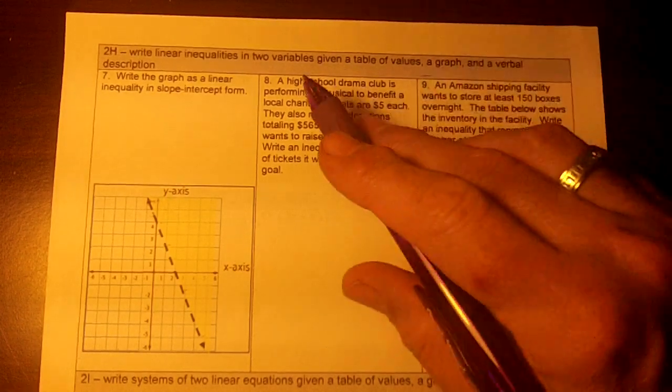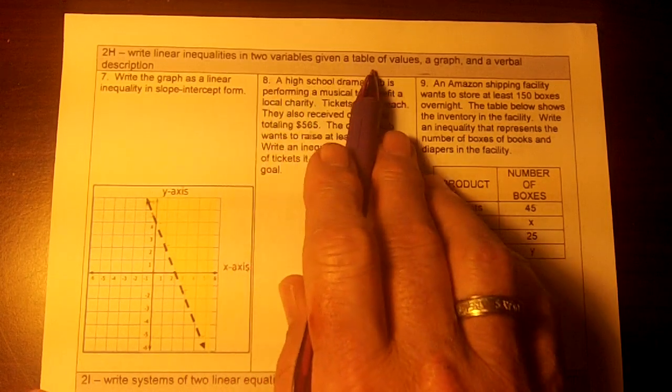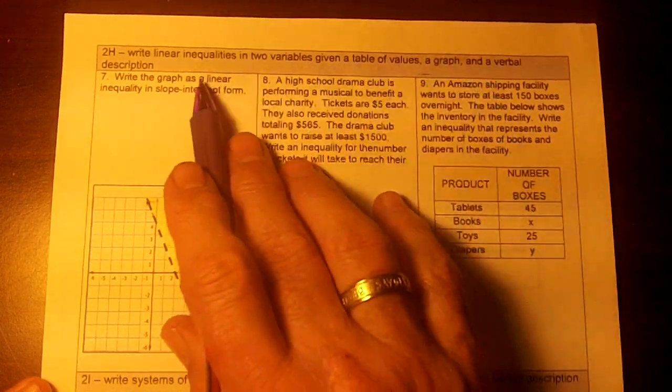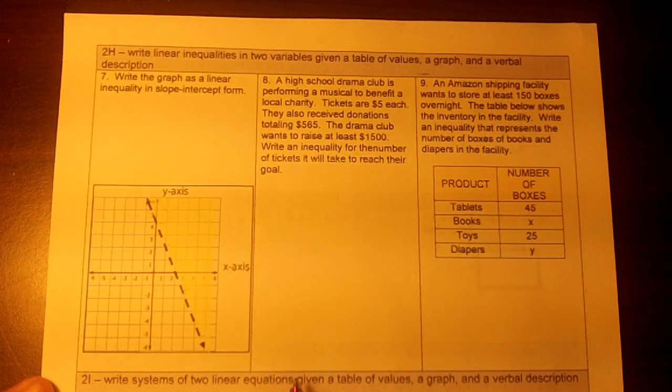Okay, we're on 7, 8, 9. On these right here, we want to write linear inequalities in two variables given a table of values, a graph, and a verbal description. So we have the graph, we have the verbal description, we have a table.